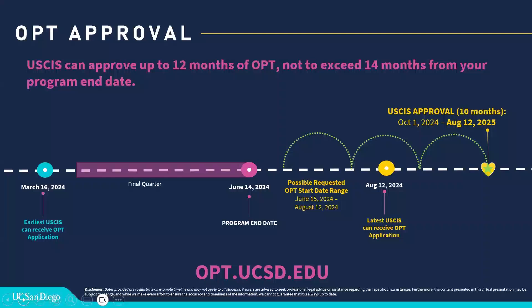Another common question: what happens after August 12th if USCIS still has not approved my application but my grace period has ended — can I stay in the U.S.? The answer is yes. If you have already submitted an OPT application and it is pending with U.S. immigration, you can stay in the U.S. and wait for USCIS to make that decision. You don't have to leave on August 12th.